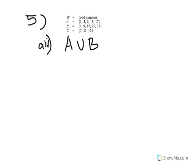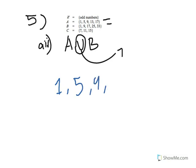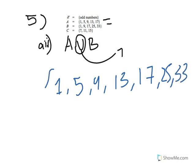Question 5A part 2 asks for A union B. The U symbol means union — all numbers in both sets. So looking at A and B, you have 1, 5, 9, 13, 17, 25, and 33. You don't need to repeat numbers — if both sets contain 1, just list it once. Union just means all possible numbers that could occur across both sets.